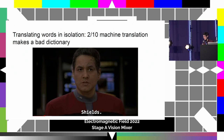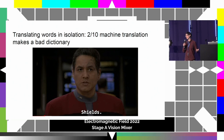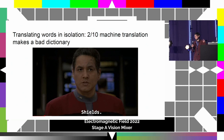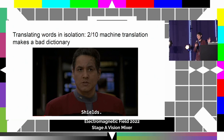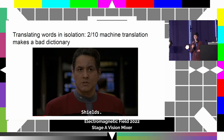Translating words in isolation makes me sad and makes all machine translation researchers sad. What does 'shields' mean? Are we talking about a part of the ship? Medieval armory? Someone called Shields? In this case it's a command - an instruction to raise the shield. But how do we know that? It's just one word. People often use machine translation systems like dictionaries; they are not trained as dictionaries and don't work very well as that. Pro tip: going to Google Translate to put in a single word often doesn't work well because they're not trained to translate without context.